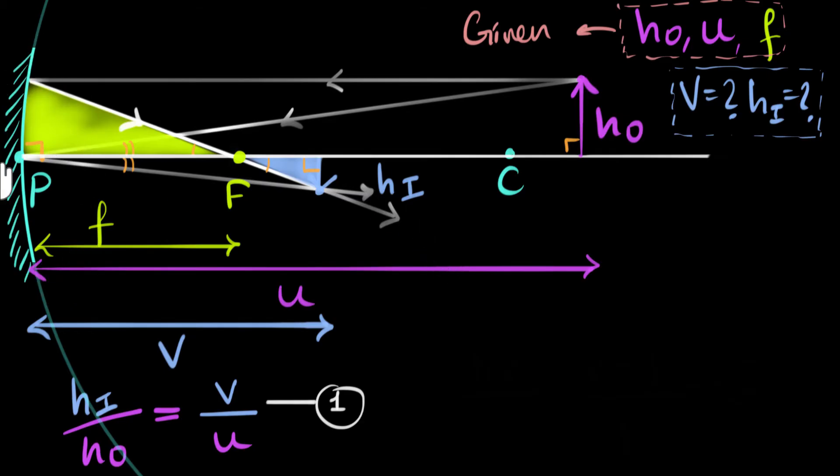So similarly, we can assume that this mirror, this curved part of the mirror is pretty much flat, because it's a small part of that entire sphere, all right? So hopefully that justifies our claim that we can approximate this to be a straight line.